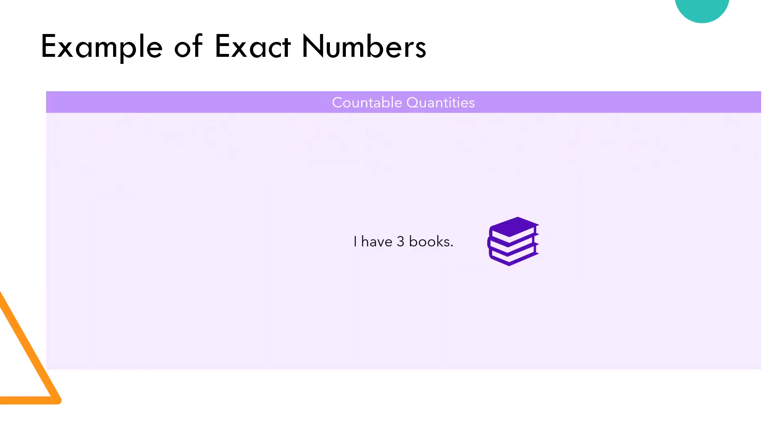If you have a specific count of items, such as I have 3 books or there are 20 students in a classroom, those numbers are exact because they represent a precise count.